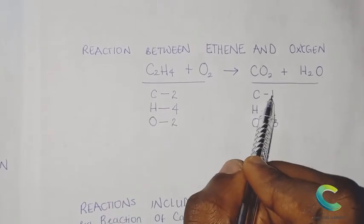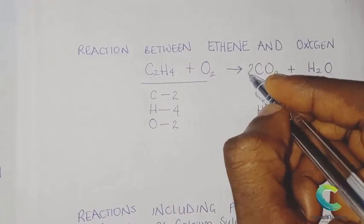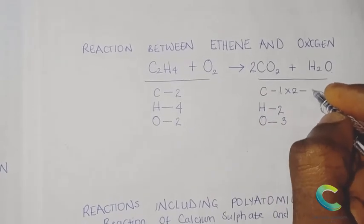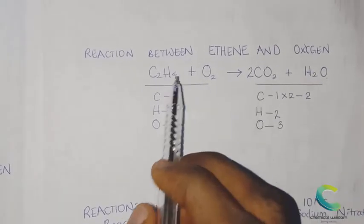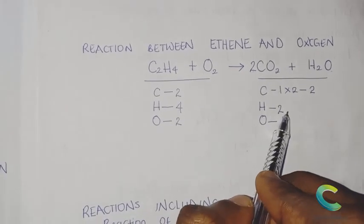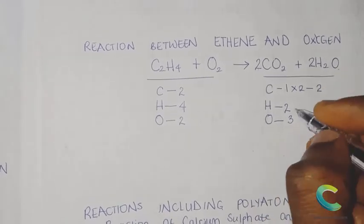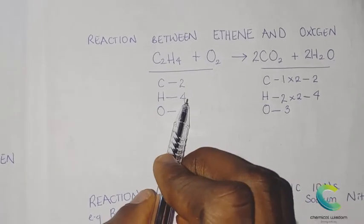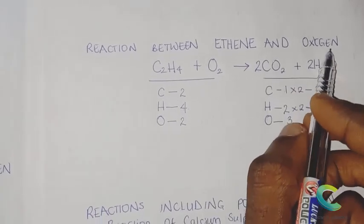The equation is not balanced — we have two carbon on the left and one on the right. Introduce a coefficient of two in front of CO₂: two times one gives two carbon atoms on the right. Now look at hydrogen — four on the left and two on the right. Introduce a coefficient of two in front of water: two times two gives four hydrogen atoms, balancing the left. But the two also affects oxygen in water.